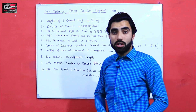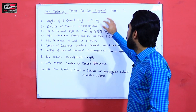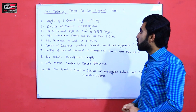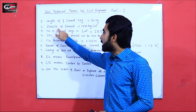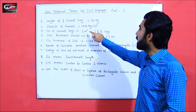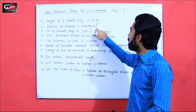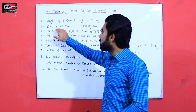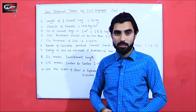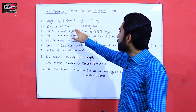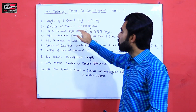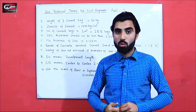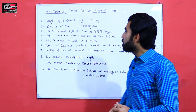The first term is weight of cement bag — the weight of one cement bag is 50 kg. The second one is also about cement: the density of cement, which is 1440 kg per meter cube. With the help of the density of cement you can find the number of bags very easily.